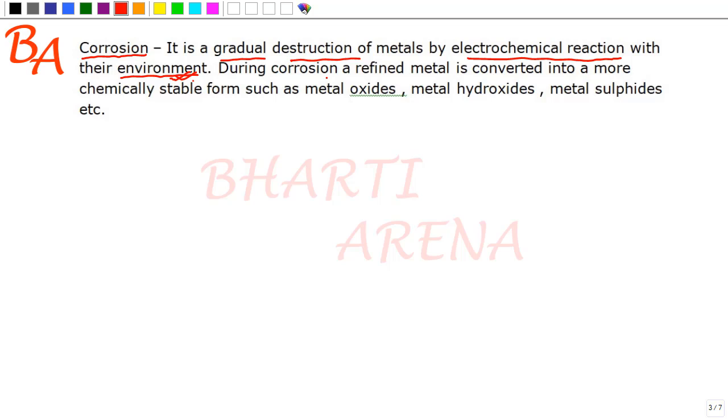During corrosion, a refined metal means pure metal is converted into a more chemically stable form such as metal oxide, metal hydroxide, metal sulphide, or many others. These are relatively stable form of the metal.